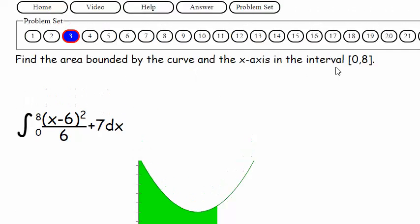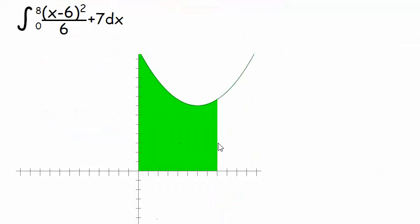Find the area bounded by the curve and the x-axis in the interval 0 to 8. So we want to go ahead and write this down. I see the only difference here is we have a 7 attached. Okay, so remember we're finding the area of the shaded region from 0 to 8.